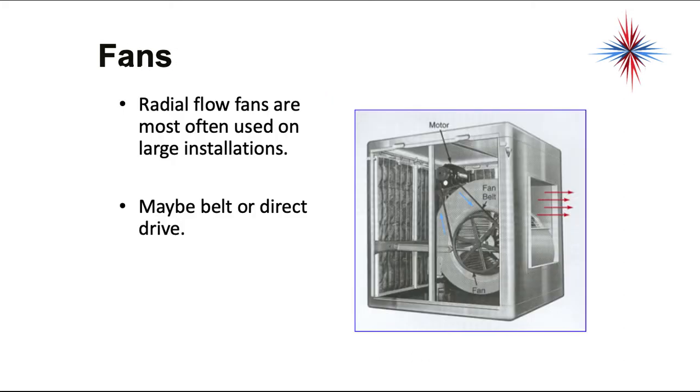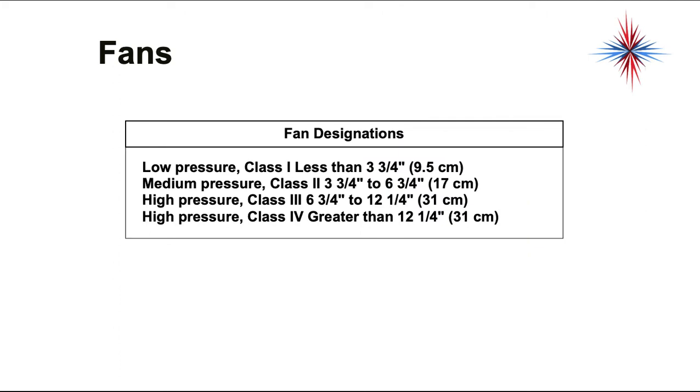Radial flow fans are most often used on large installations or in any type of air handler or residential air handler furnace, anything where we need to move air quickly down ductwork. We don't often see belt driven fans anymore in residential. More of these are direct drives, but this is just an example. They can be belt or direct drive. There are some fan designations: a low pressure, which is considered a class one fan.